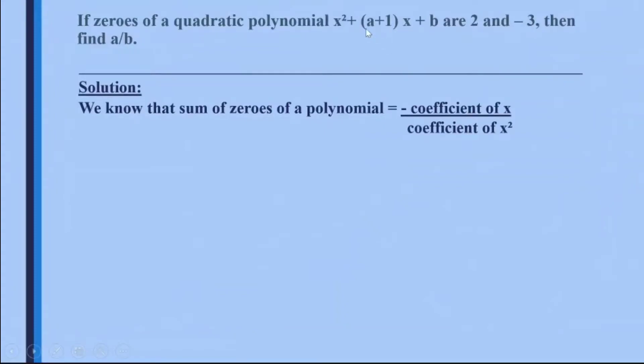So coefficient of x here is (a+1). So it's going to be -(a+1)/1. So we get 2 + (-3) = -(a+1). That means -1 = -a - 1. That means I get a = 0.